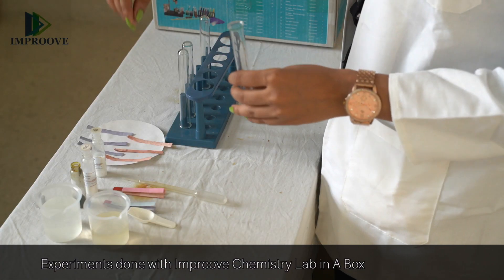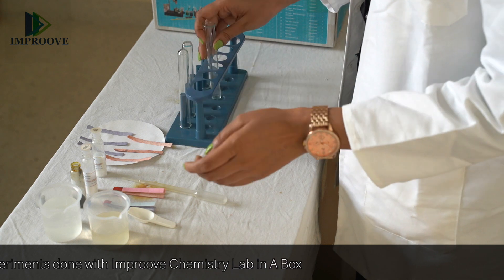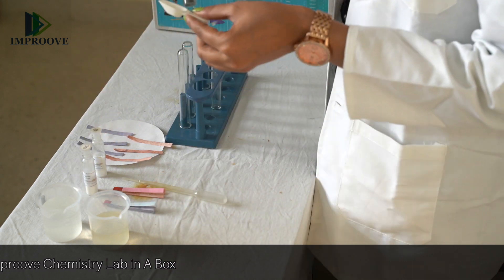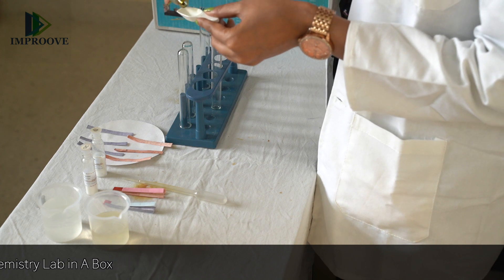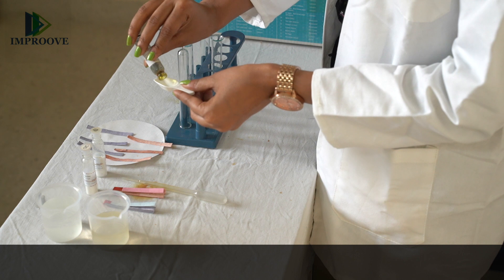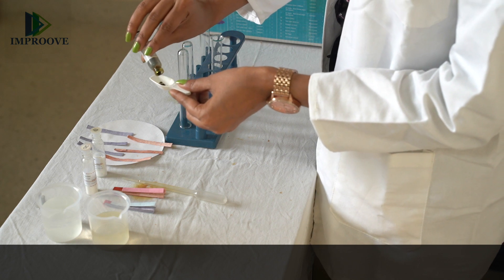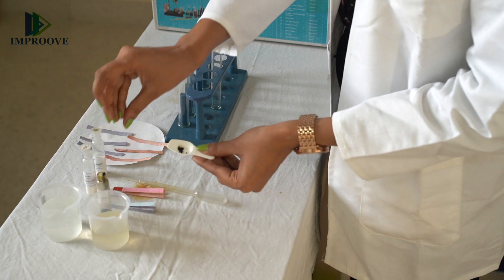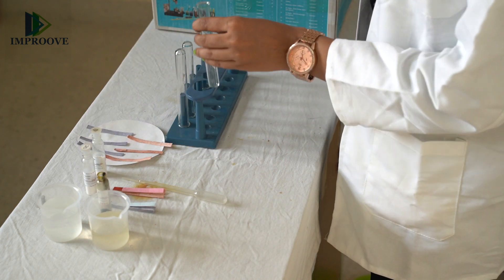In the first step, take a test tube and add about 0.5 grams of ferric chloride using the spoon, just about this much, and pour it into the test tube.